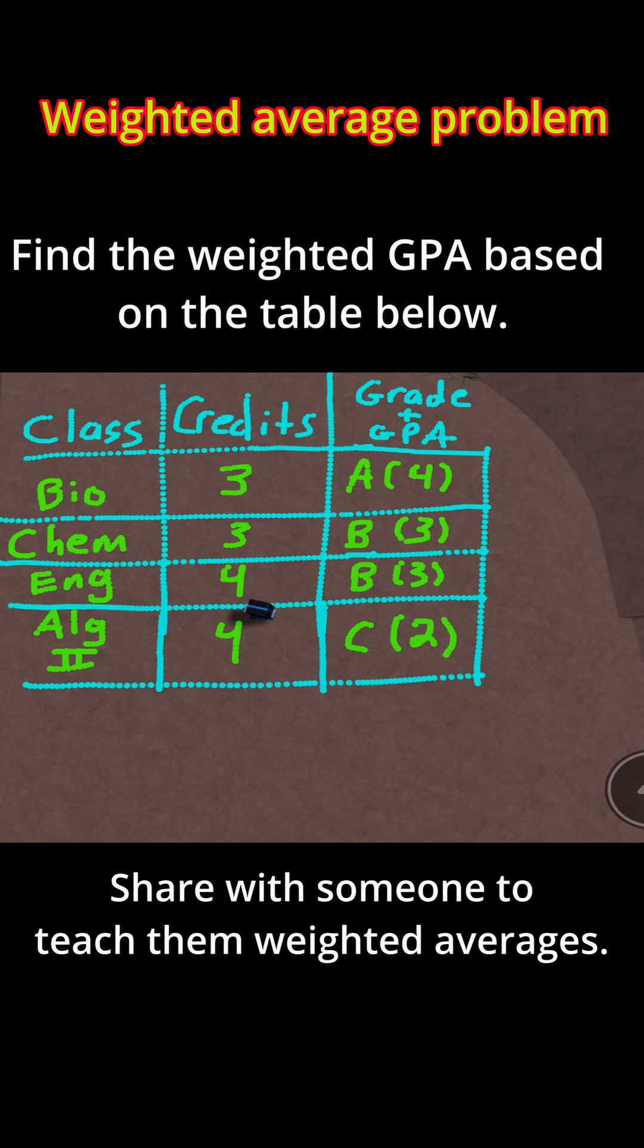Based on this, we need to find the weighted average. To compute a weighted average, you have to take each value, which is our GPAs in this case, and weigh them accordingly because some grades are worth more than others. For example, this Algebra 2 class is four credits, which means it has more weight than a three-credit biology class.